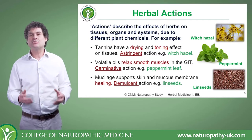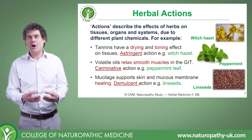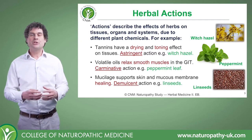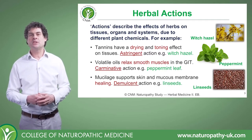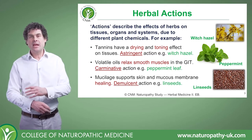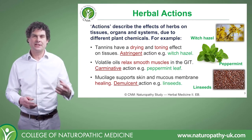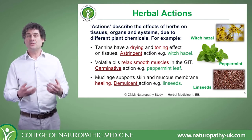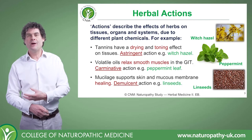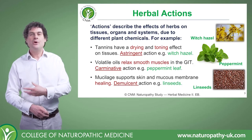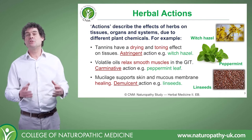An astringent action is the action to tone and tighten mucous membranes, to stop excess discharges from the system, to heal and seal the skin, and to heal and seal the gut. An example of that is witch hazel — don't take witch hazel internally, but it's a fantastic external astringent herb for stopping oozing and bleeding of the skin. This drying and toning effect is due to tannins.